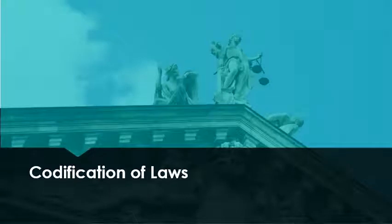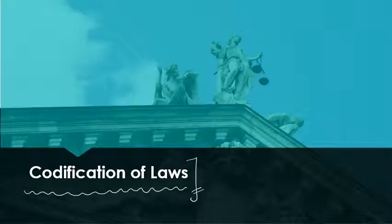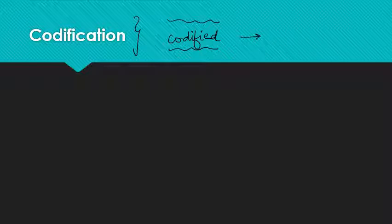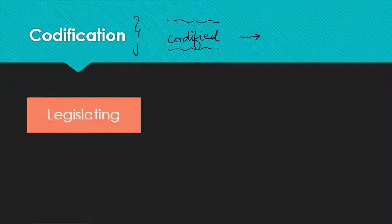I will now discuss the term 'codification of laws.' Codification is basically the process whereby something is codified — it means we have written it down. You can think of codification as a process whereby there is a legislation, which means someone is legislating and bringing something into writing.